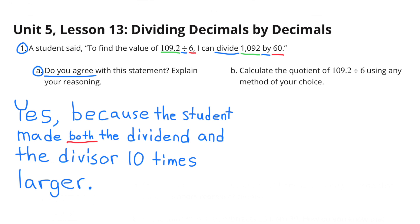A student said: To find the value of 109 and 2 tenths divided by 6, I can divide 1092 by 60. Do you agree with this statement? Explain your reasoning. Yes, I agree, because the student made both the dividend and the divisor 10 times larger.